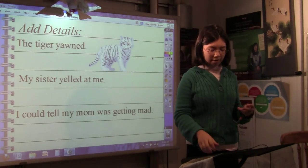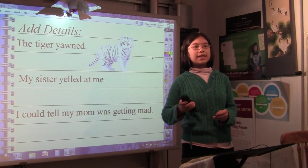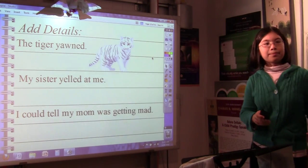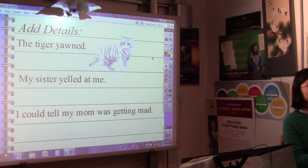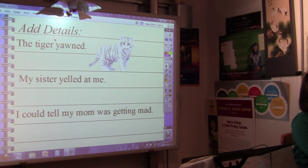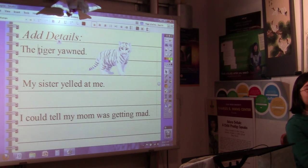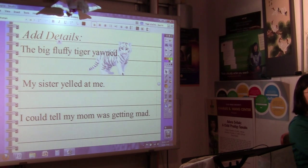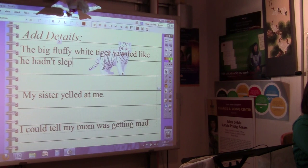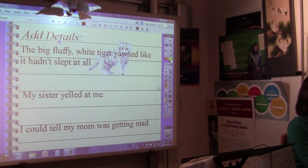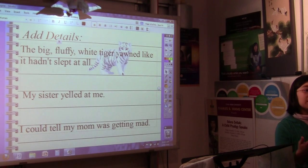Let's practice now adding details to our writing. Starting with the tiger yawned. So what more can we add to the tiger yawned? How can we make that a more descriptive sentence? And I'll be typing things up as we go. Isaac? You can say what color was a tiger? How would you write that? How would you change that sentence? The big, fluffy, white tiger yawned like it didn't sleep at all. Very good. The big, fluffy, white tiger yawned like it hadn't slept at all. Great. And if you wanted, you could even go further. You could even add another sentence.